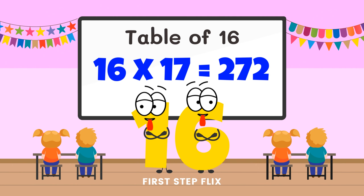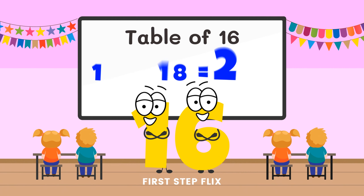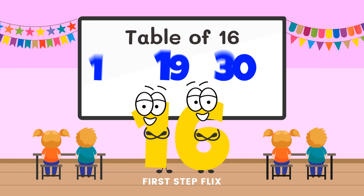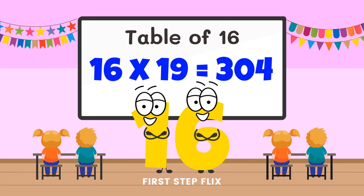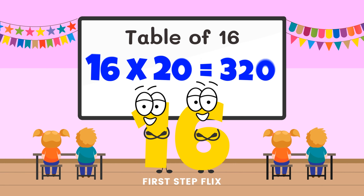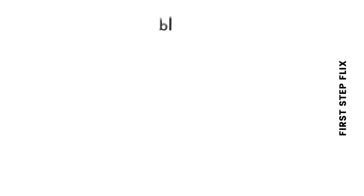16 seventeens are 272. 16 eighteens are 288. 16 nineteens are 304. 16 twenties are 320. Let's repeat one more time.